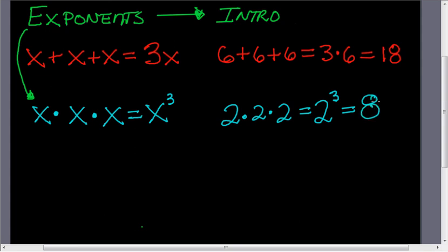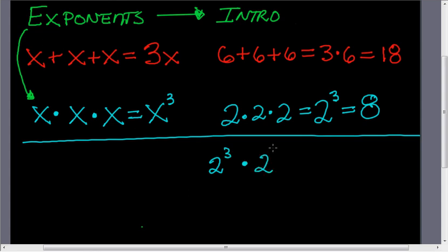Now we can expand upon this and use it to simplify other exponents. What if I took my twos example? What if I had two to the power of three and it was multiplying another two to the power of two?